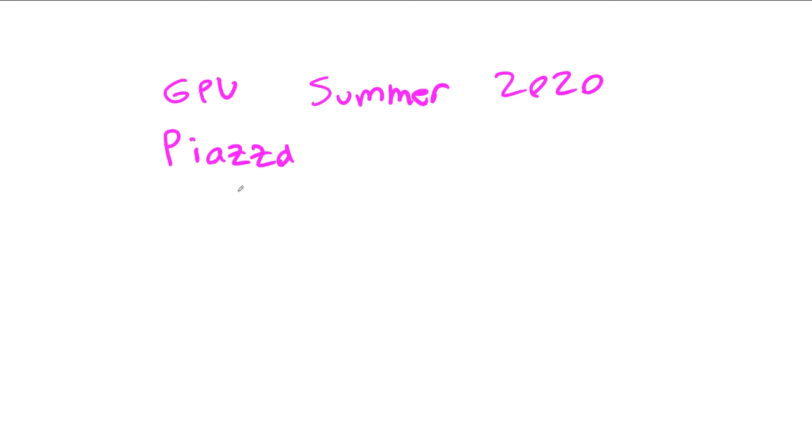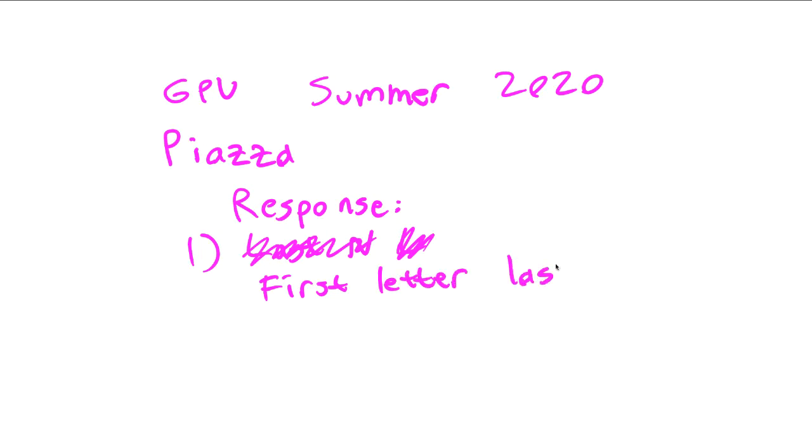I want you to find that post and make a response. And I would like two things from you. I would like you to take the first letter of your last name. And I would like you to turn that into a numeric value the usual way. So I would like you to map A to 1 and Z to 26.